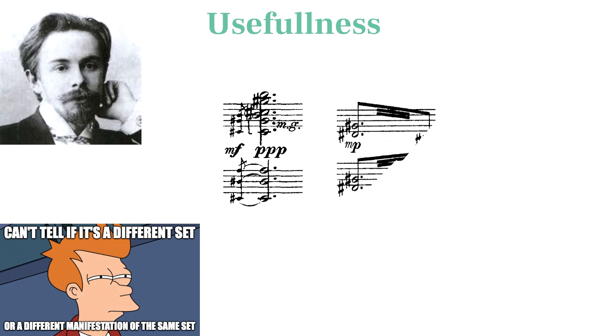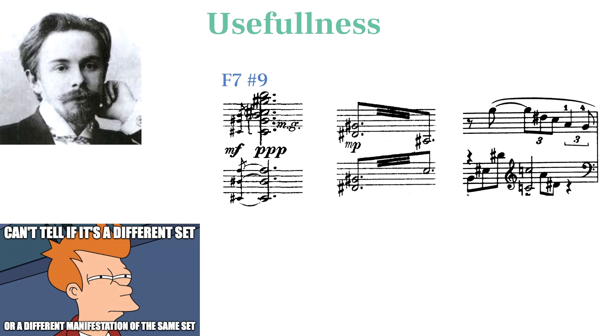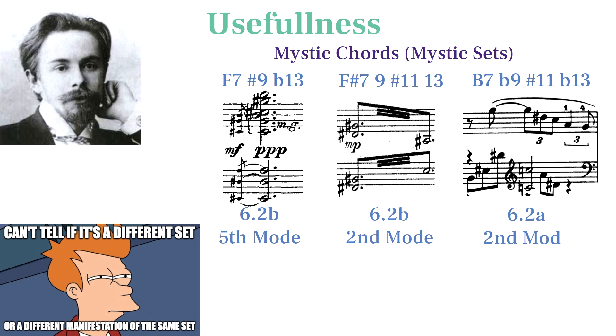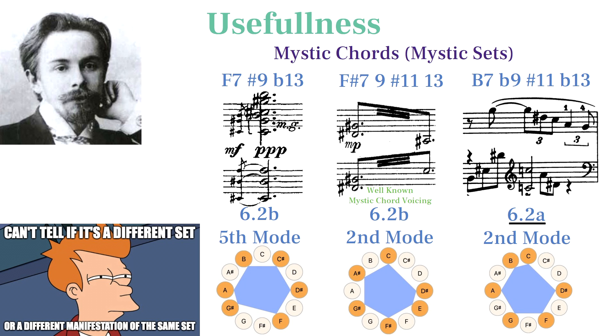For instance, Scriabin used all of these contrasting chords, and yet all belong to his Mystic set labeled 6.2. It's difficult to tell because they're all in different modes from each other and the last one uses the inversion pair of the popularly known version of the Mystic chord, yet they all belong to the same set and would be visualized as the same fundamental shape.